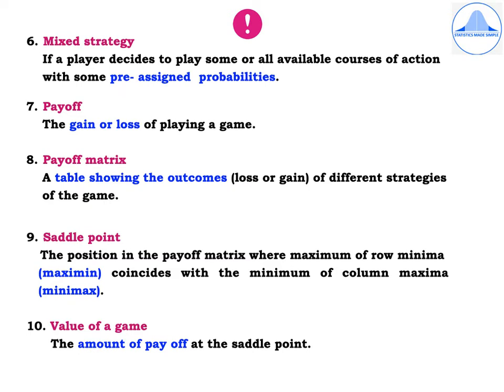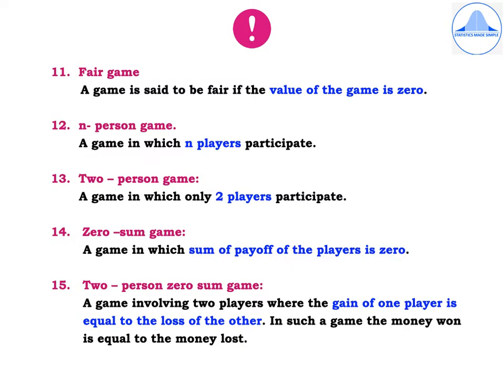All these definitions are very important and you will understand them when we solve problems; most of them are important one and two markers. Fair game: a game is said to be fair if the value of the game is zero. N-person game: a game in which N players participate. Two-person game: a game in which only two players participate. Zero-sum game: a game in which the sum of the payoffs of the players is zero. Two-person zero-sum game: a game involving two players where the gain of one player is equal to the loss of the other; in such a game, the money won is equal to the money lost.